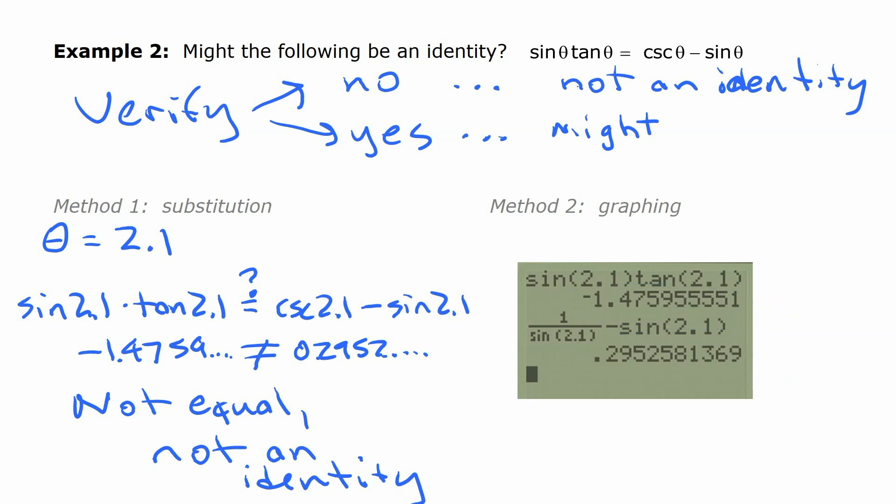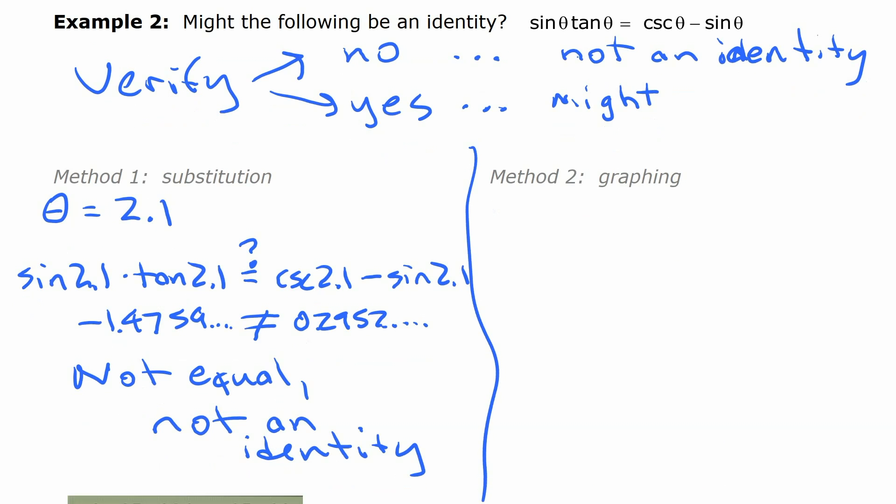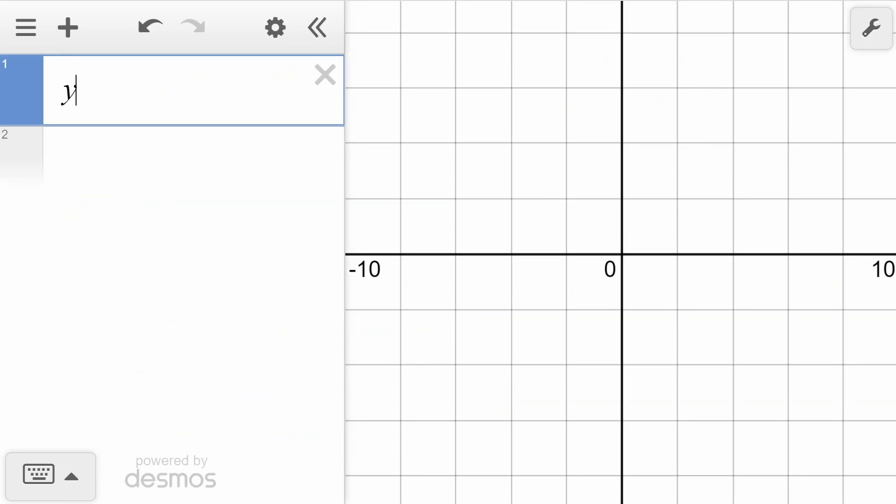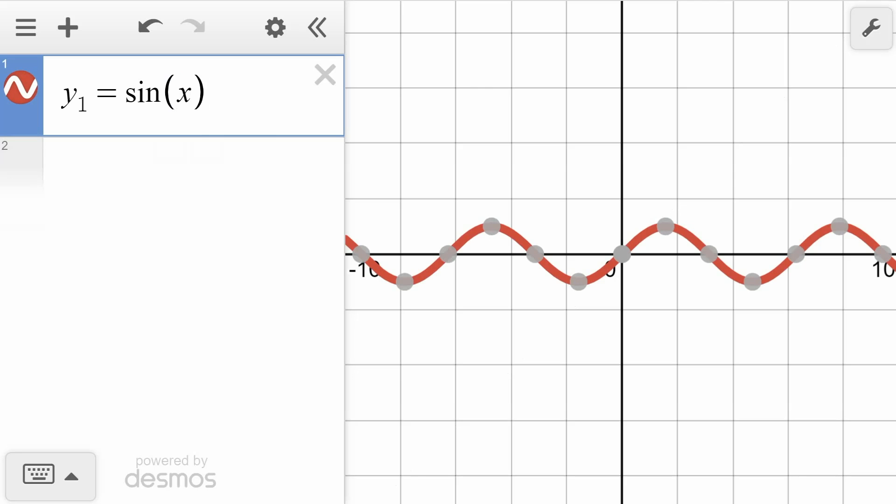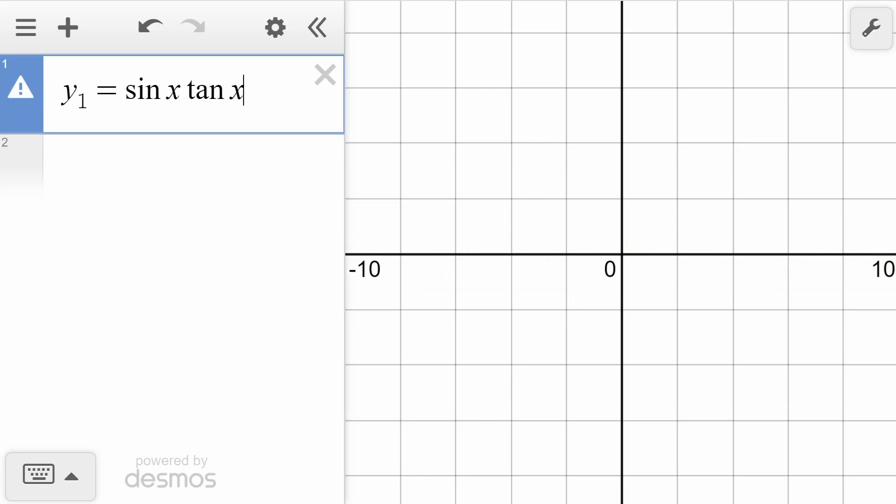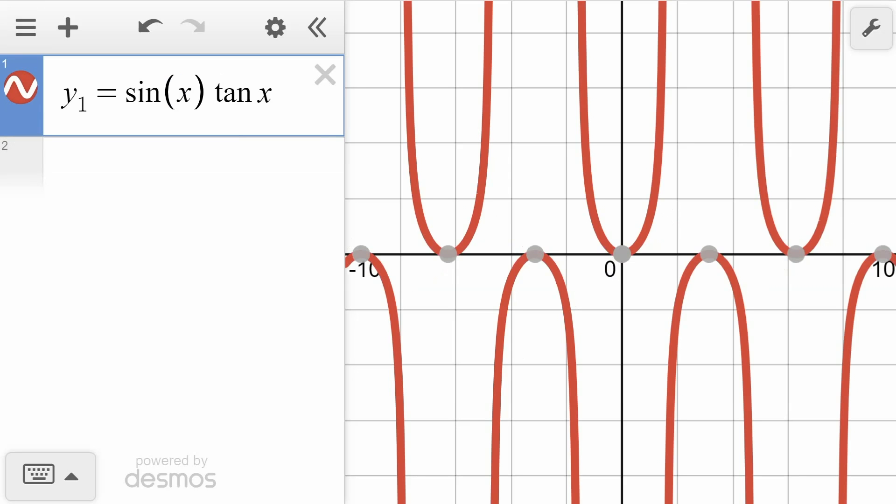All right. So let's do it by graphing now. So for graphing, our approach is we're going to graph a function for each side here and see what we get. So we're going to graph y1 equals sine theta tan theta and y2 equals cosecant theta minus sine theta. So we'll go to Desmos and graph that and see what we get. So our first function, y1 is equal to sine, I'm going to use an x here. And the way Desmos works, it's going to want me to put brackets around it because it says it needs parentheses around the argument of sine.